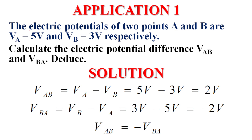Simple application — Application one: The electric potential of two points A and B are VA equals 5 volts and VB equals 3 volts respectively. Calculate the electric potential difference VAB and VBA. Solution: VAB equals VA minus VB equals 5 minus 3 equals 2 volts. VBA equals VB minus VA equals 3 minus 5 equals negative 2 volts. We deduce that VAB equals negative VBA.